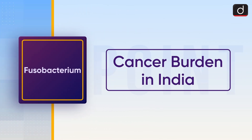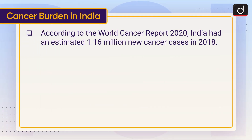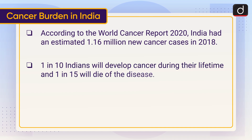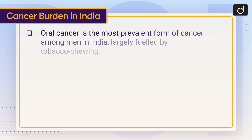Now let's discuss the cancer burden in India. According to the World Cancer Report 2020, India had an estimated 1.16 million new cancer cases. One in 10 Indians will develop cancer during their lifetime, and 1 in 15 will die of the disease. The six most common cancer types in India are breast cancer, oral cancer, cervical cancer, lung cancer, stomach cancer, and colorectal cancer. Oral cancer is the most prevalent form of cancer among men in India, largely fueled by tobacco chewing.